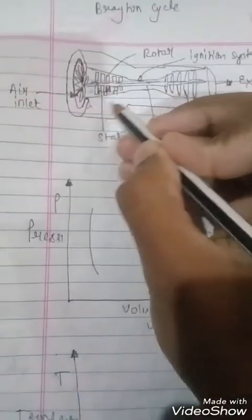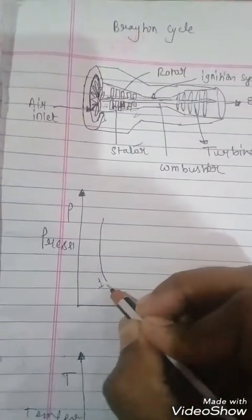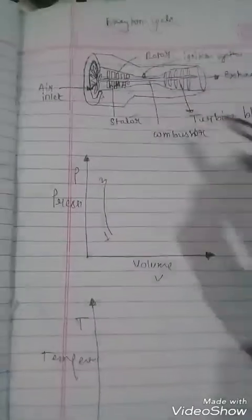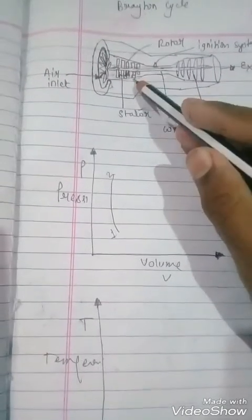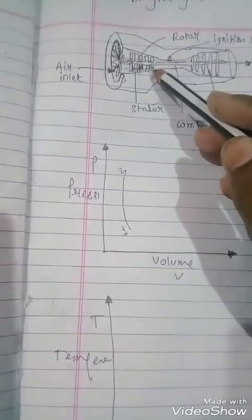At this point the air gets pressurized. Process one to two is the compression of the sucked air. The velocity increases, pressure increases.